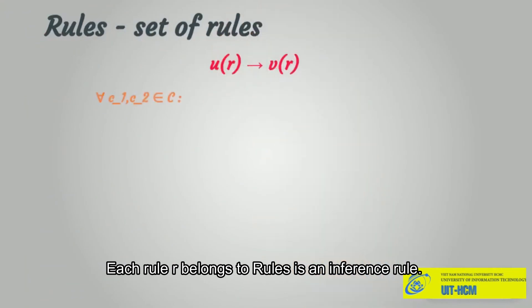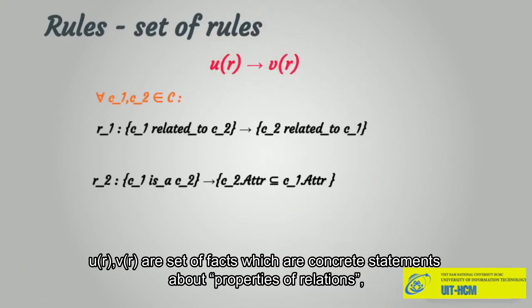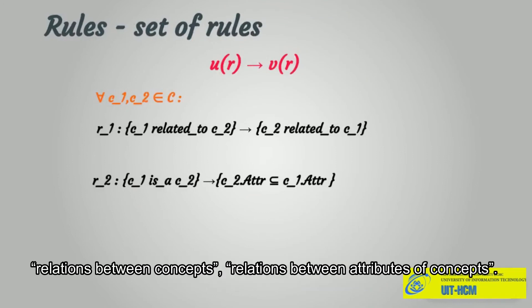Each rule R belongs to rules is an inference rule. U_R and V_R are sets of facts which are concrete statements about properties of relations, relations between concepts, and relations between attributes of concepts.